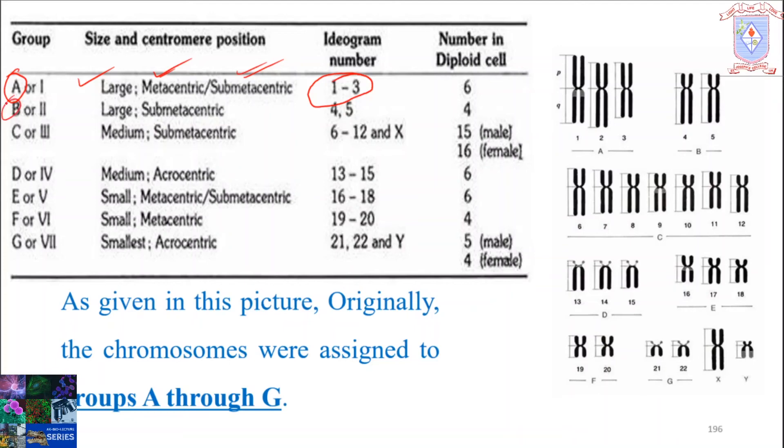In Group B, also named Group 2, chromosomes 4 and 5 are included. They are large submetacentric chromosomes. In Group C, or Group 3, you can see the sixth to twelfth chromosomes and the X chromosome. They are medium in size and submetacentric in nature.